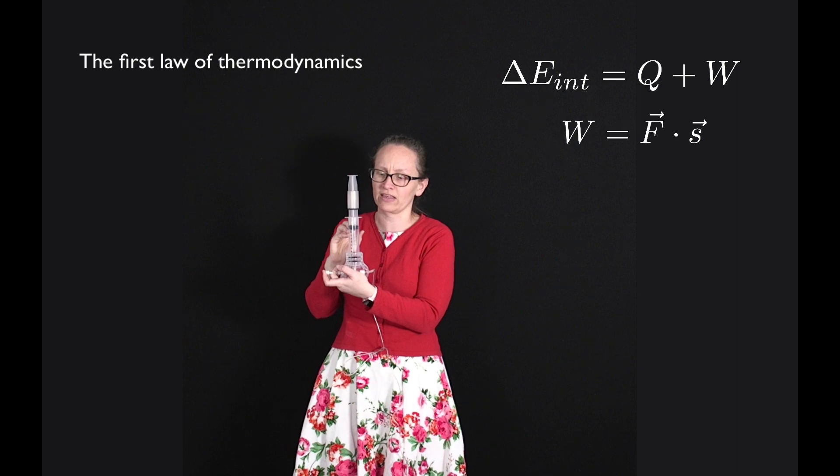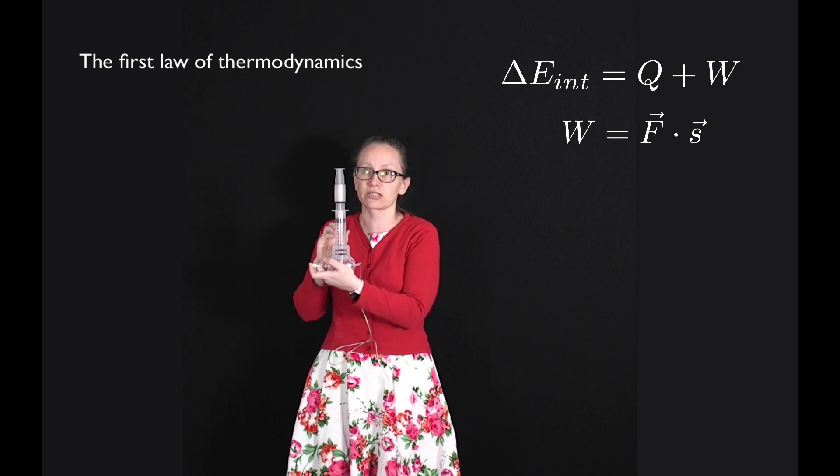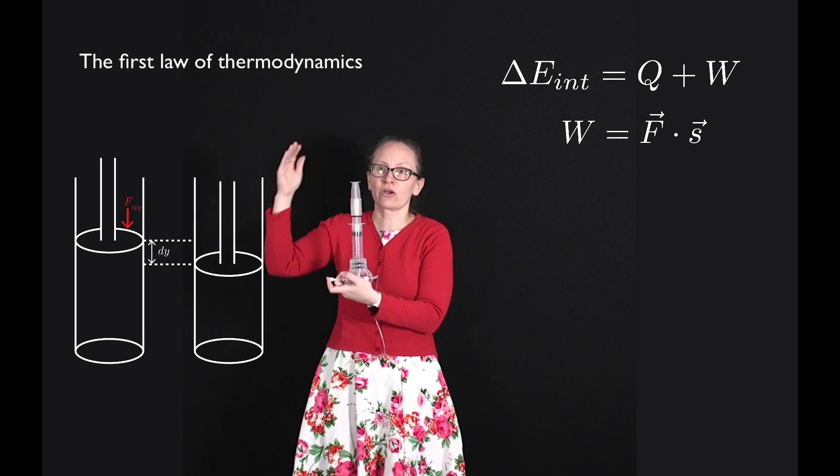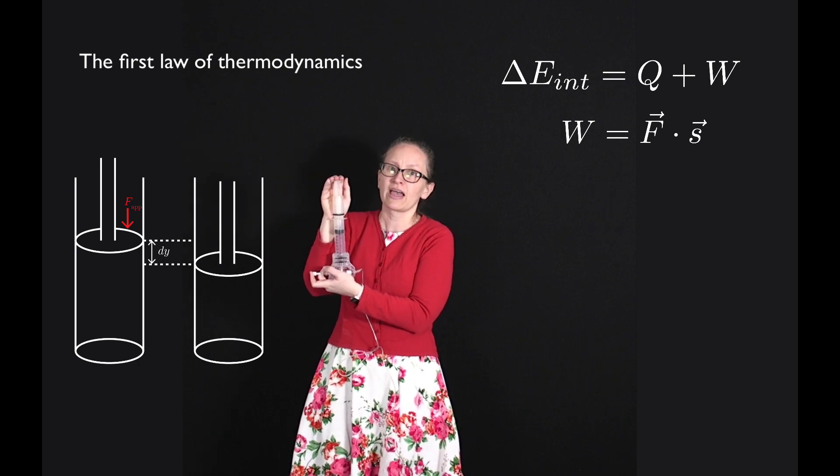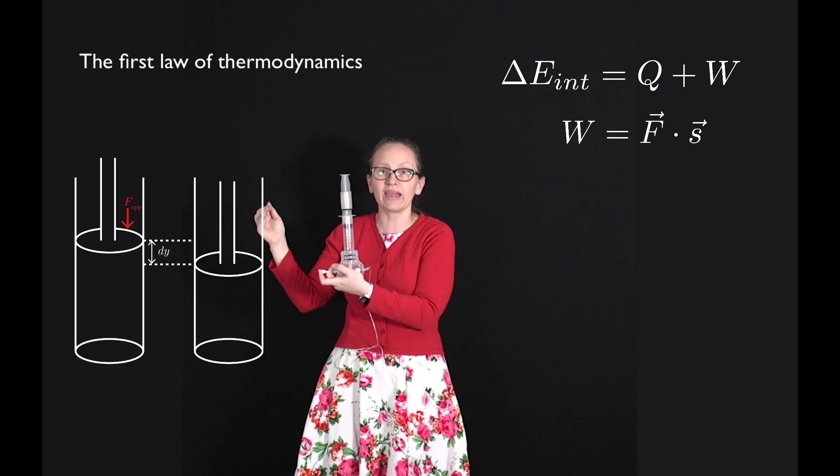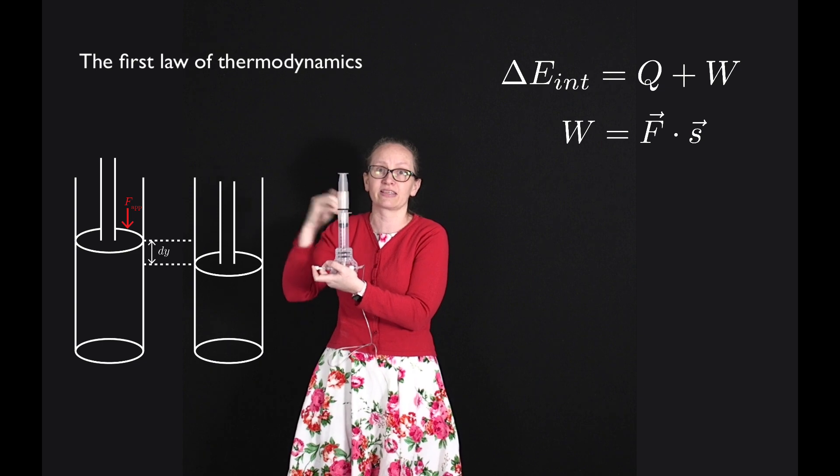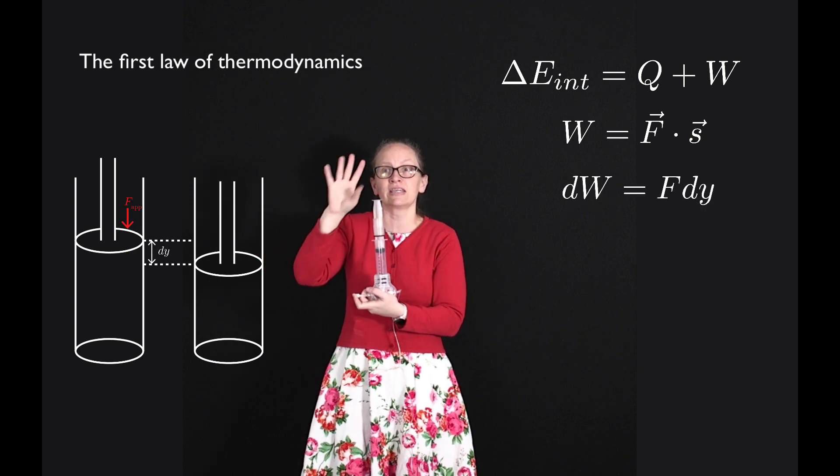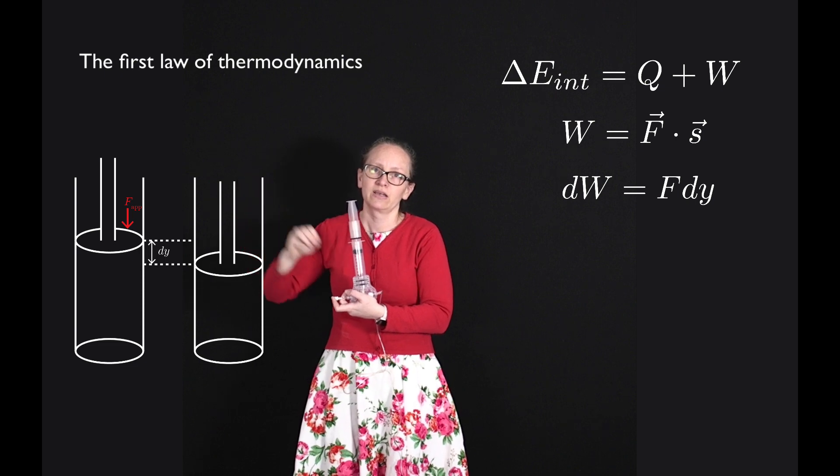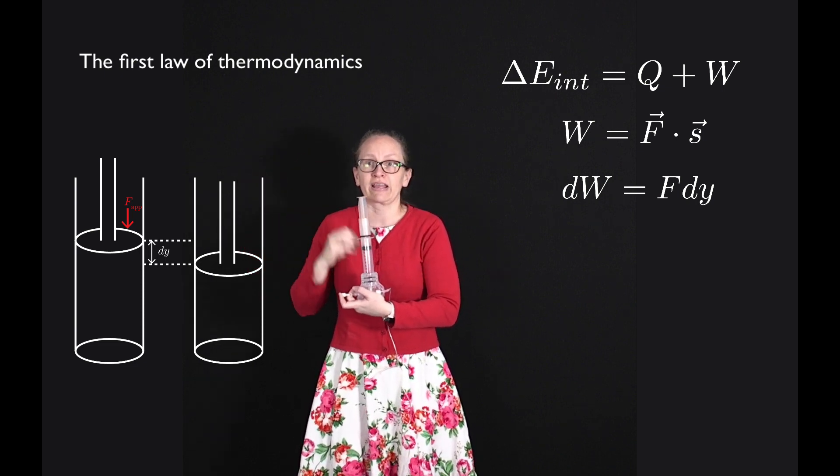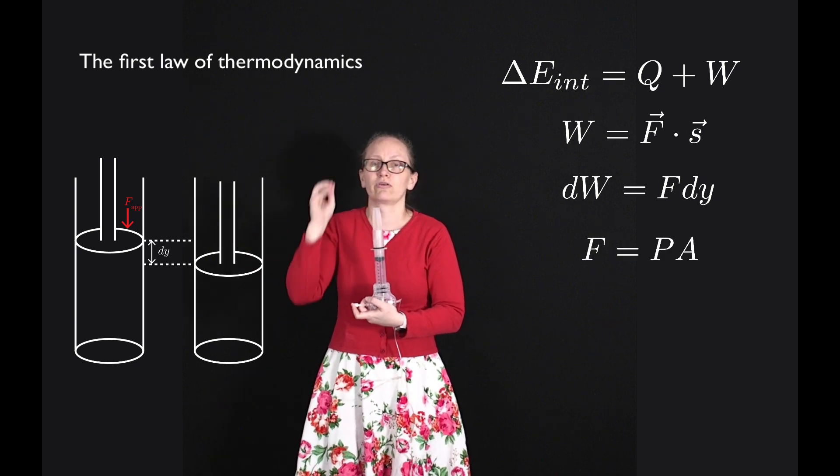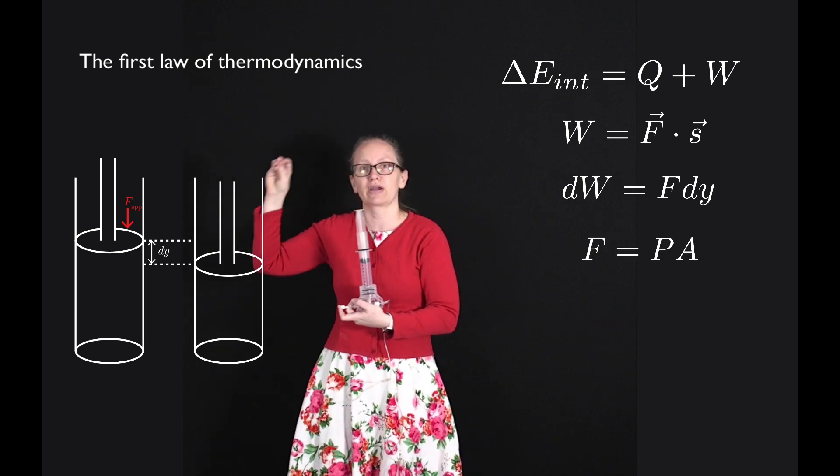Let's consider moving the piston down just a small height and let's call the height difference dy. So if I applied some force and the piston moves down a distance dy then I'm applying the force in the same direction as the displacement and so I've got dW is equal to F dy. Now we've learned about the pressure of a gas before and we've seen that it's related to the force through force is equal to pressure times area.